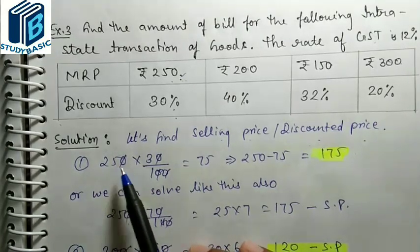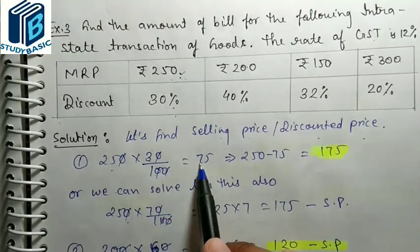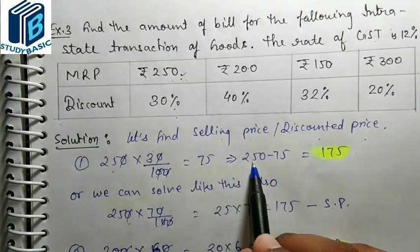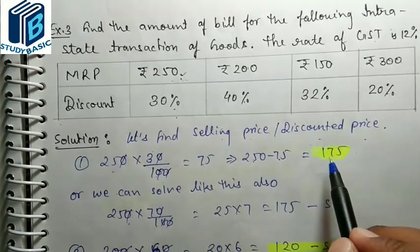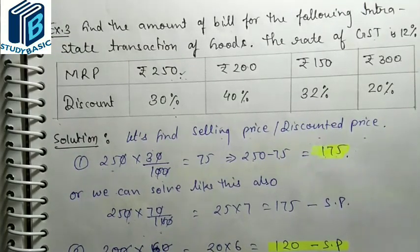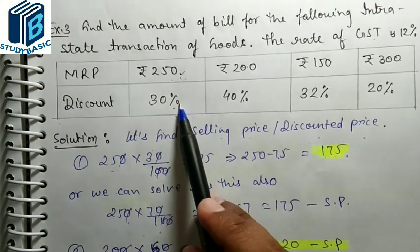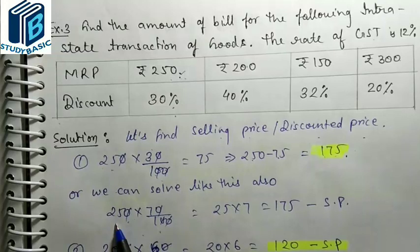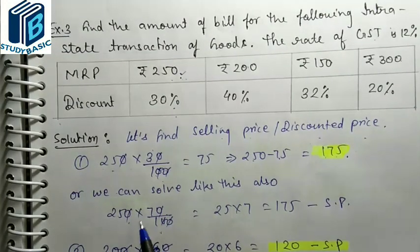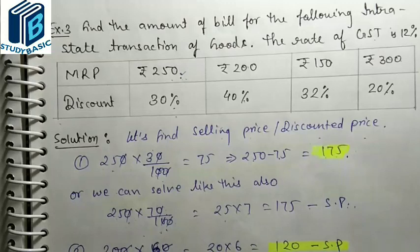To find selling price: for Rs. 250 with 30% discount, the value remaining is 70%, so 250 × 70/100 = Rs. 175. For Rs. 200 with 40% discount, 60% remains: 200 × 60/100 = Rs. 120. For Rs. 150 with 32% discount, 68% remains: 150 × 68/100 = Rs. 102. For Rs. 300 with 20% discount, 80% remains: 300 × 80/100 = Rs. 240.